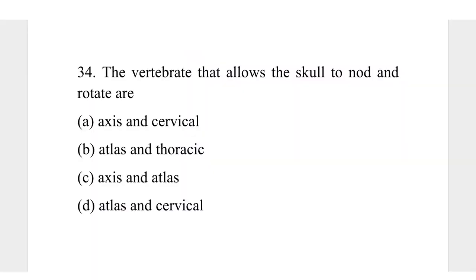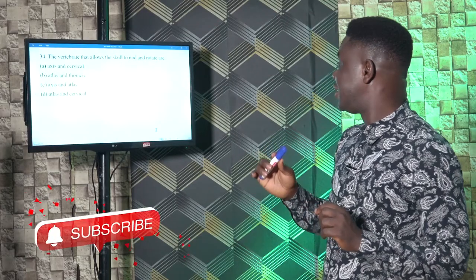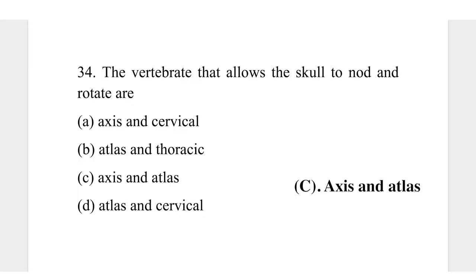Question 34. The vertebrae that allow the skull to nod and rotate are: A, axis and cervical. The vertebrae that allow the skull to nod and rotate are the cervical vertebrae. The cervical vertebrae are divided into two: axis and atlas. One allows the head to turn and the other allows the head to rotate. The correct answer is C, axis and atlas.